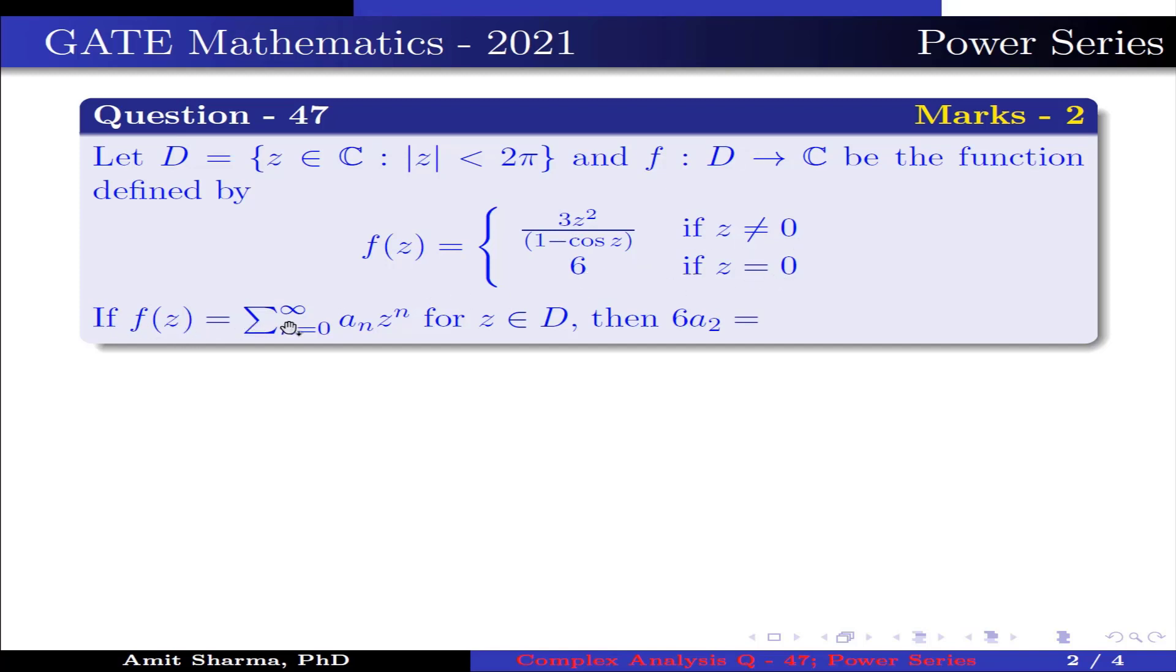If f(z) = Σ(n=0 to ∞) aₙzⁿ for z ∈ D, then 6a₂ equals what? Given that f: D → C be the function defined by f(z) = 3z²/(1 - cos z).